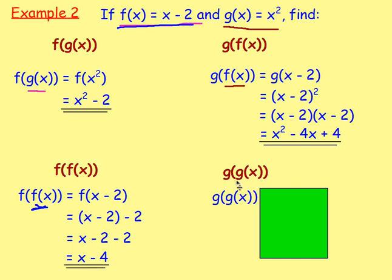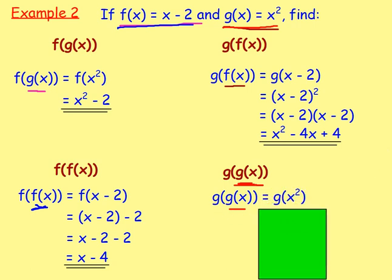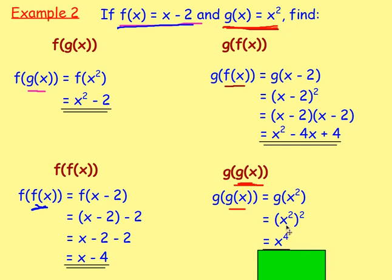Last, g(g(x)). Start in the middle: g(x) = x². You cannot simplify that, so replace g(x) with x², giving g(x²). In function g, replace x with x²: instead of x² we have (x²)². x² times x² equals x to the power of 4. That is your answer.